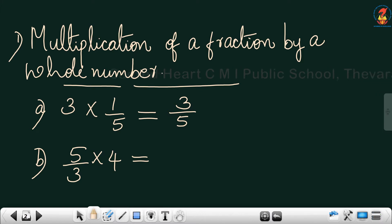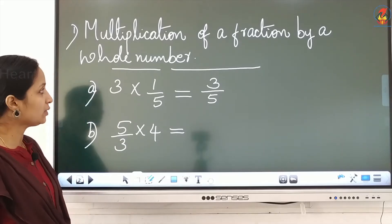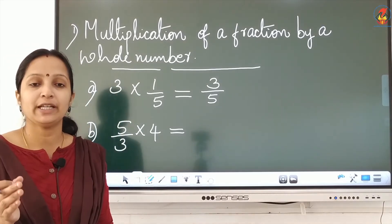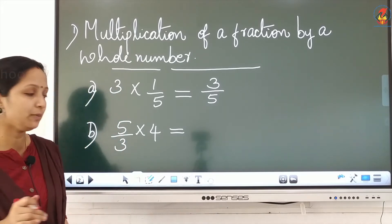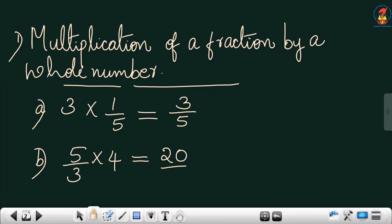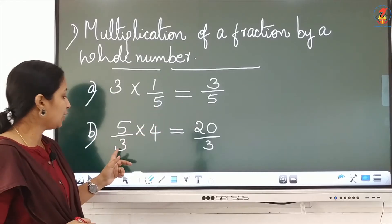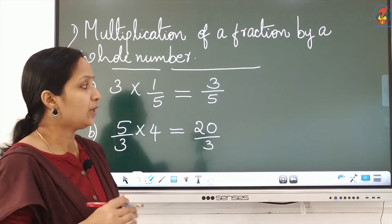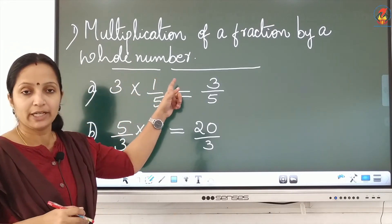If there is confusion, think of it this way: if there is no denominator, the denominator is 1. So 1 into 5 equals 5 itself. The rule for multiplying a fraction by a whole number is: multiply the numerator and write the same denominator. For example, 5 into 4 by 3 — multiply the numerator to get 20, and write the same denominator 3.